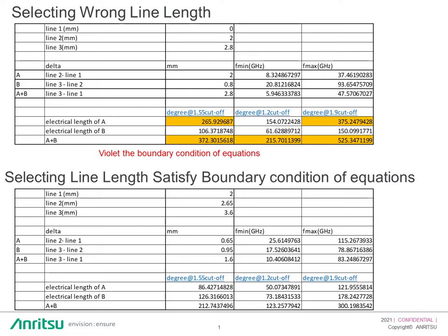If you want to design your own cal kit, you can. For instance, selecting lengths of 2mm, 2.65mm, and 3.6mm — you can see the electrical length of A, electrical length of B, and A plus B all satisfy the boundary conditions of the equations.